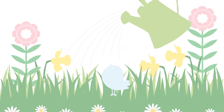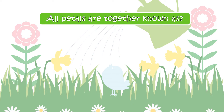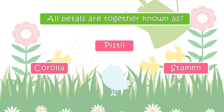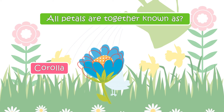The next question is: All petals are together known as? Your options are Corolla, Pistil, Stamen, or Calyx. The right answer is Corolla.